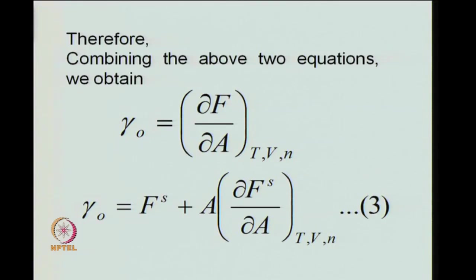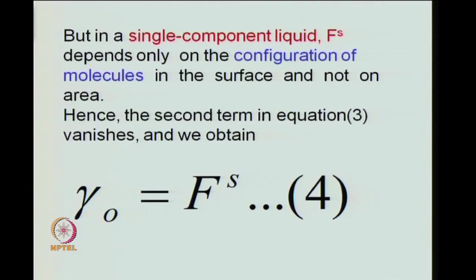We inspect the second term: A times ∂F_s/∂A at constant T, V, and N. We ask whether F_s depends on area, or for a single stable liquid, would it depend only on the configuration of molecules? We realize that for a single component system, F_s should only depend on the configuration of molecules, and therefore ∂F_s/∂A can be identified to be zero.